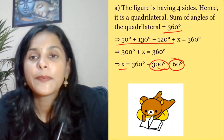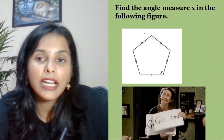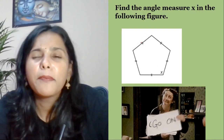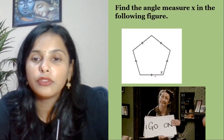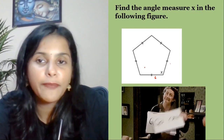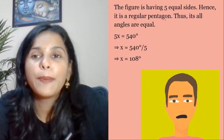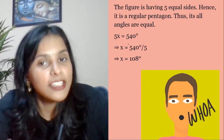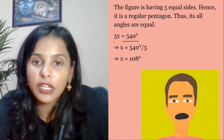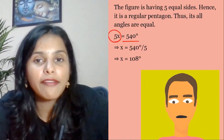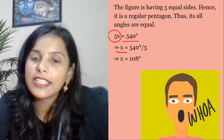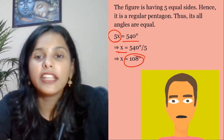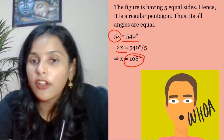Next question: find the value of x for a pentagon. A pentagon has five sides, so we have five angles. The sum of interior angles of a pentagon is 540 degrees. So each interior angle is 540 divided by 5, which equals 108 degrees.